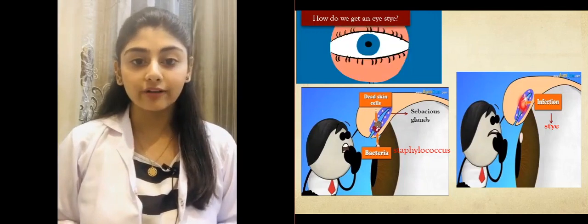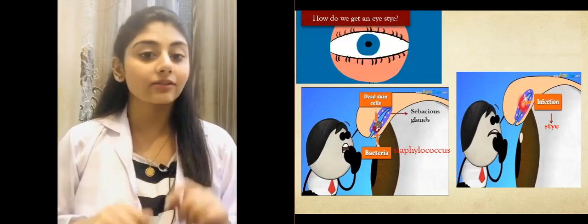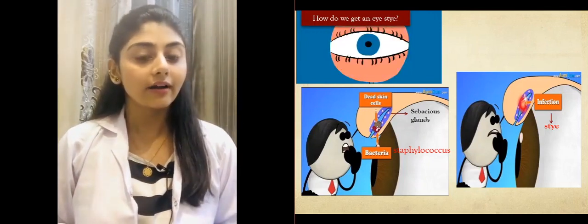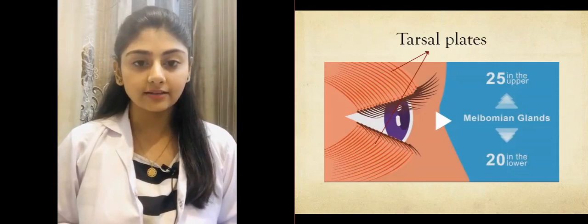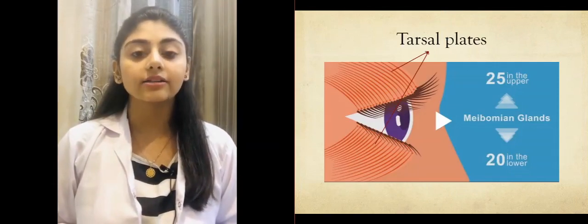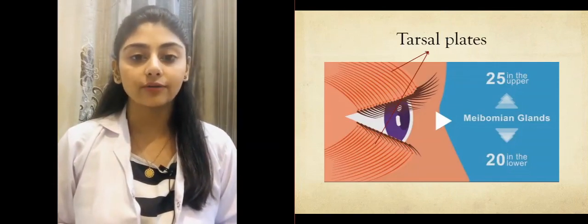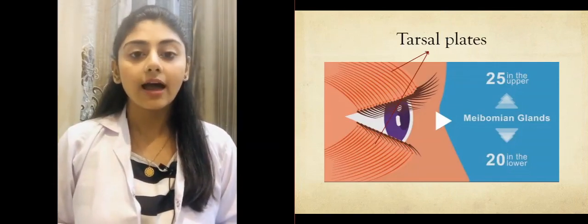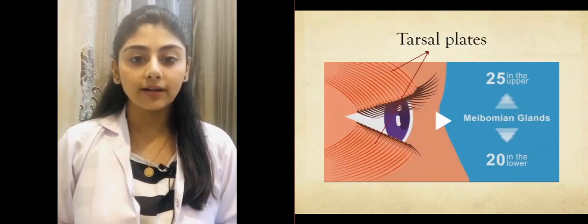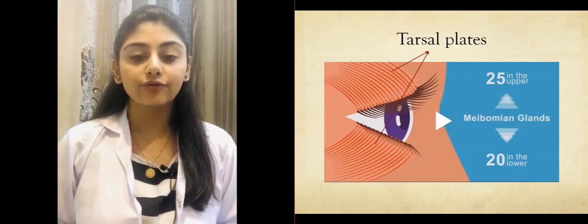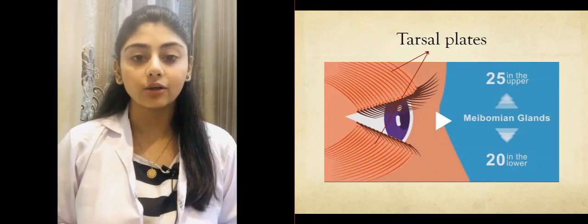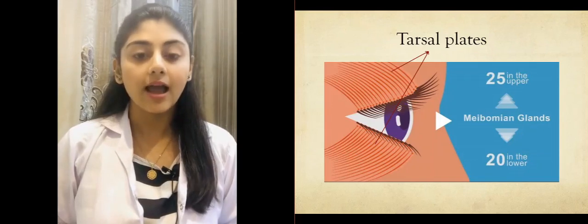You must be wondering why — there is a reason for that. It's because the number of sebaceous glands in the upper eyelid is more compared to the lower eyelid. For example, the number of meibomian glands in the upper eyelid is 25 to 45, while in the lower eyelid it is 20 to 30. That explains the reason.